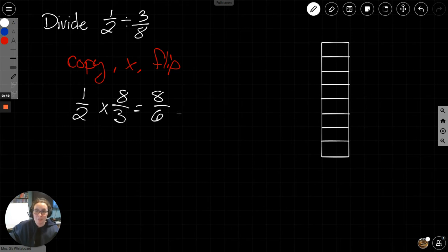This can be simplified. 8 over 6 is an improper fraction. We cannot leave it as it is. How many times does 6 go into 8? That's one time.